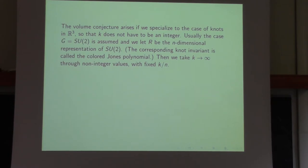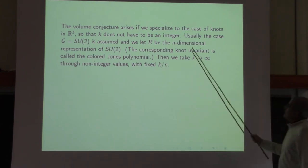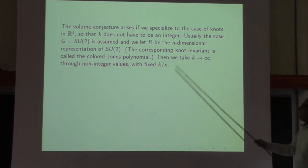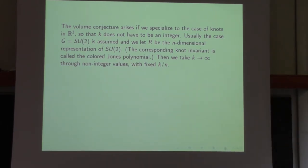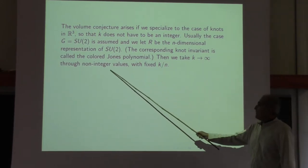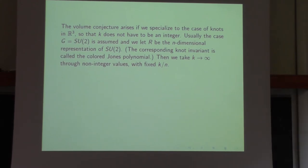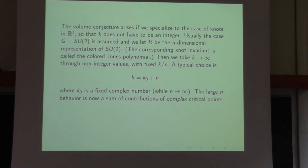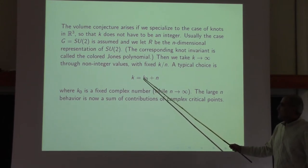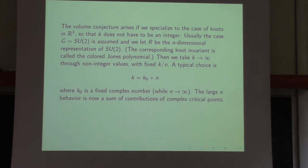That's the story for a general three-manifold where k has to be an integer, but we can take it to be a large integer. Now let's consider the case of knots in R3, so that k doesn't have to be an integer. Usually G is SU(2) and in formulating the volume conjecture we let R be the n-dimensional representation of SU(2). In that case the knot invariant is called the colored Jones polynomial. Then we take k to infinity through non-integer values with fixed k over n.